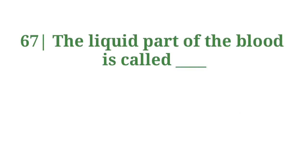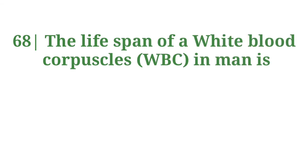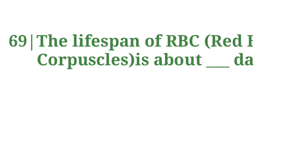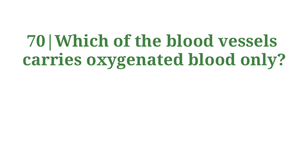The liquid part of the blood is called plasma. The lifespan of white blood corpuscles in man is 13 to 20 days. The lifespan of red blood corpuscles (RBC) is about 120 days. Which blood vessel carries oxygenated blood only? Answer: Pulmonary veins.